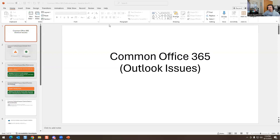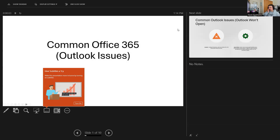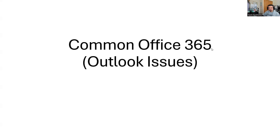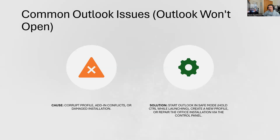Okay, so I'm going to share screen three, move the slide over, and share. It looks like I was sharing the wrong screen, so let me share again — screen one. There we go, you should be able to see it now. So, common issues for Office 365.